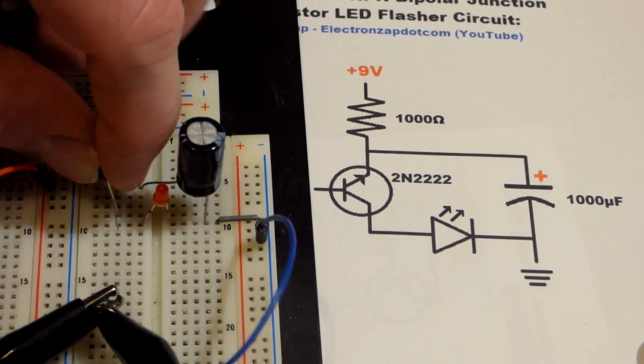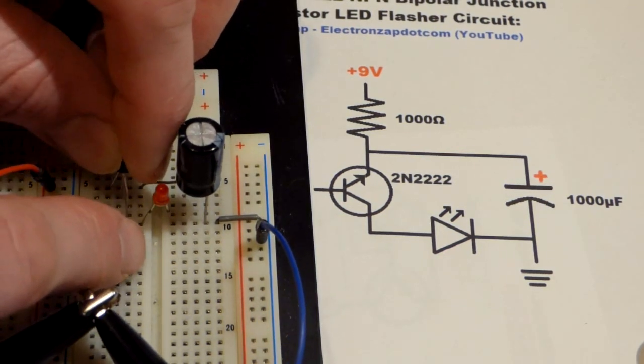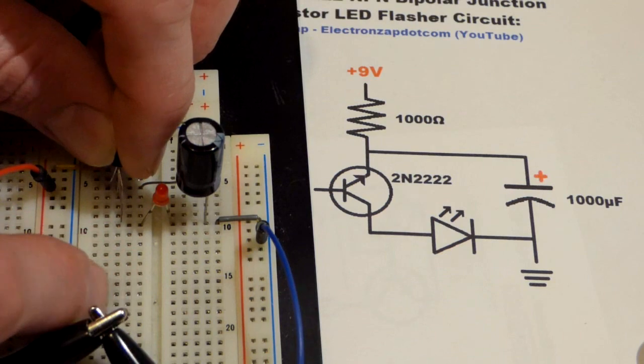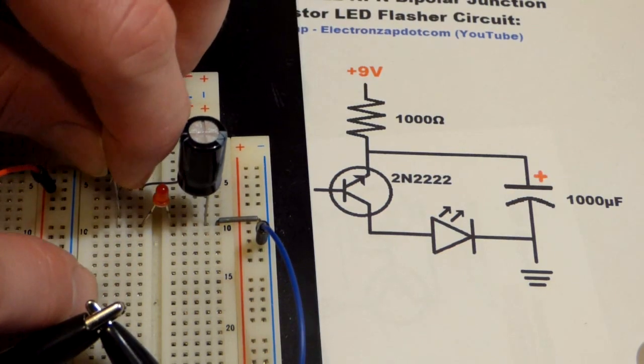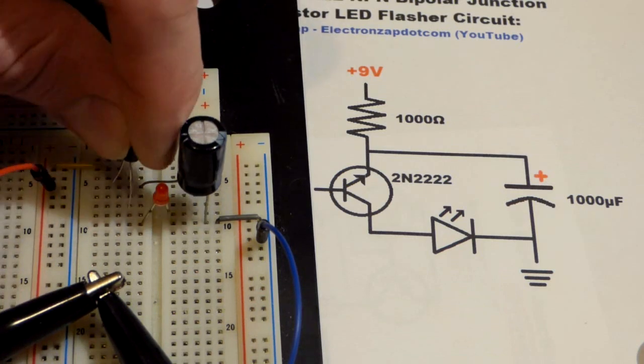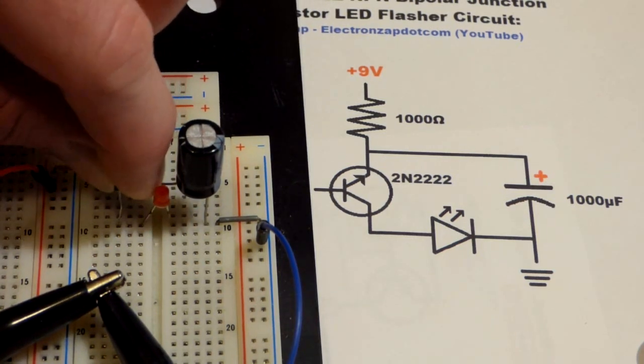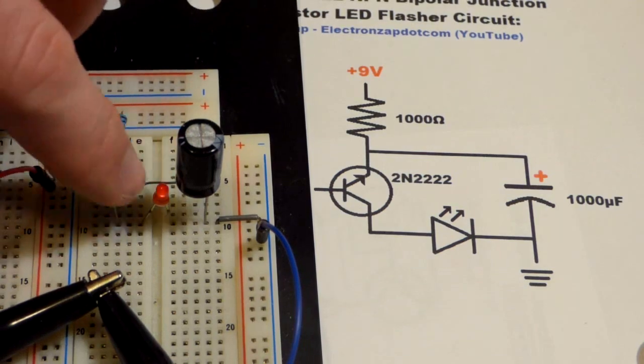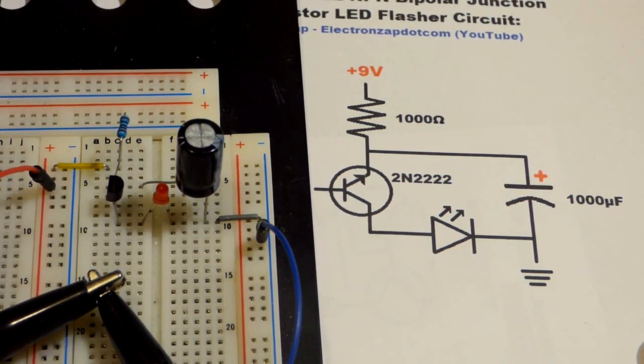It only works when you technically put it in backwards. Because usually the emitter is more... these leads are getting bent like crazy. The emitter is usually more negative than the collector. And okay, I think I was off the spot. There we go. But yeah, now we got the emitter back to the more positive side of the circuit. And now it flashes.